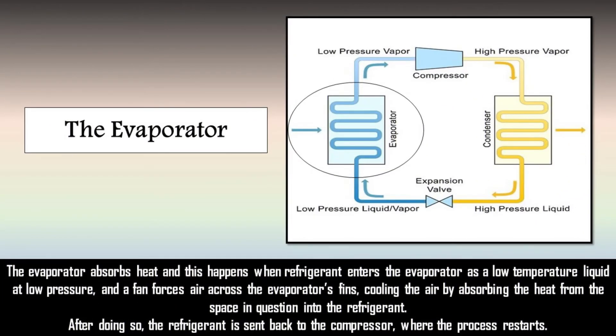Lastly, the evaporator. The evaporator absorbs heat and this happens when refrigerant enters the evaporator as a low temperature liquid at low pressure. And the fan forces air across the evaporator's fields, cooling the air by absorbing the heat from the space in question into the refrigerant. After doing so, the refrigerant is sent back to the compressor where the process restarts.